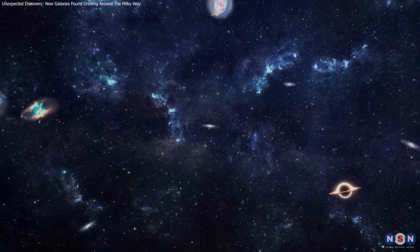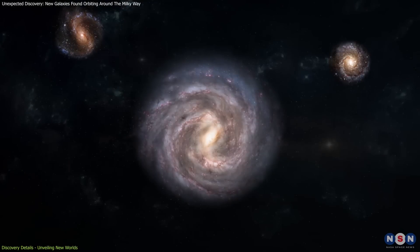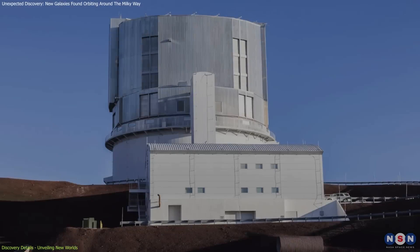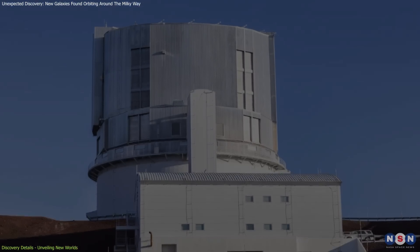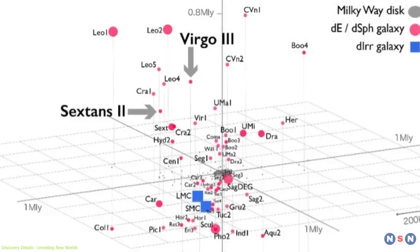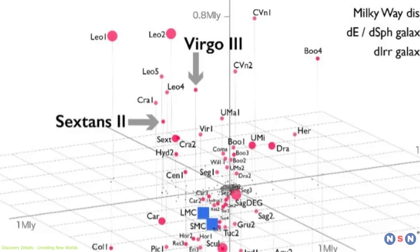The cosmos is vast and full of mysteries, one of which has been the elusive nature of satellite galaxies orbiting the Milky Way. Using the Advanced Subaru Telescope, astronomers have recently unveiled two previously hidden galaxies, named Virgo 3 and Sextans 2.